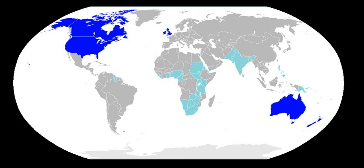England and English, originally Anglaland and Anglish, are named after the Angles. Old English was divided into four dialects: the Anglian dialects, Mercian and Northumbrian, and the Saxon dialects, Kentish and West Saxon. Through the educational reforms of King Alfred in the 9th century and the influence of the Kingdom of Wessex, the West Saxon dialect became the standard written variety. The epic poem Beowulf is written in West Saxon, and the earliest English poem, Caedmon's Hymn, is written in Northumbrian. Modern English developed mainly from Mercian, but the Scots language developed from Northumbrian.